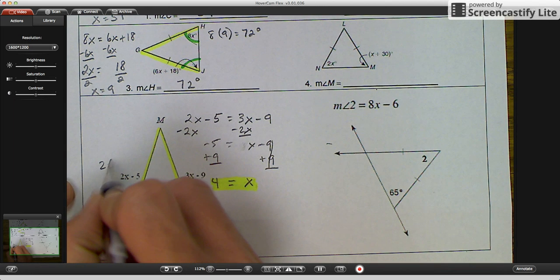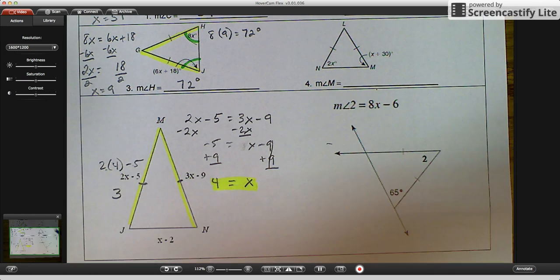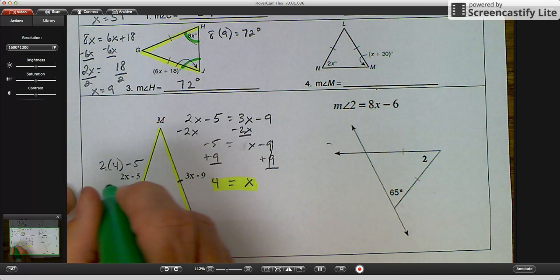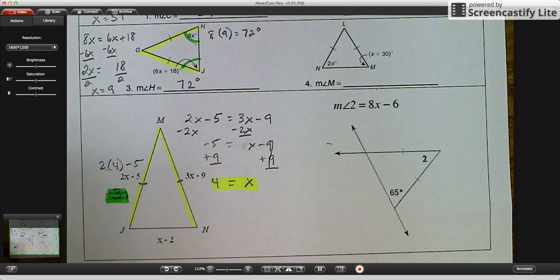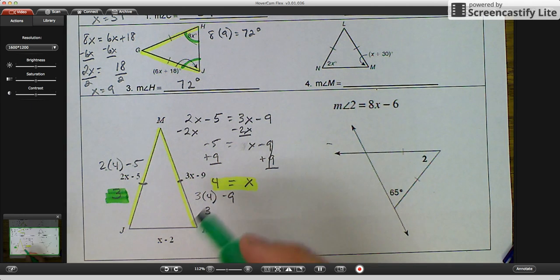2 times 4 minus 5. 2 times 4 is 8. Minus 5 is 3. So the measurement of our one side is 3. The measurement of our other side, 3 times 4 minus 9. 3 times 4 is 12. Minus 9 would be 3 again. And again, remember, they are isosceles. So they need to be congruent or need to equal each other.